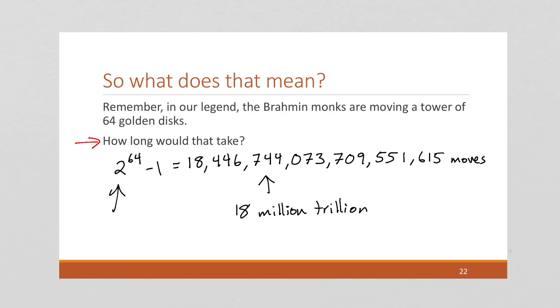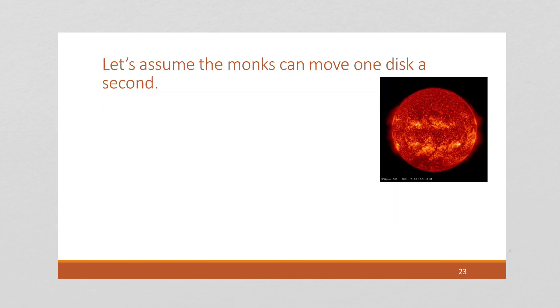To figure that out, we're going to need to make some assumptions as to how fast the monks can move these discs. To do that, let's assume that the monks can move one disc a second, which is still pretty fast, given that 64 discs, you're going to have some very large golden discs that are going to be heavy.